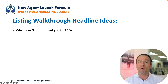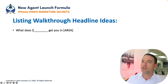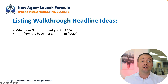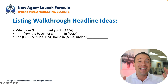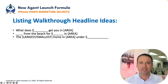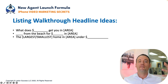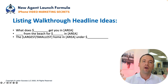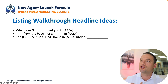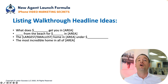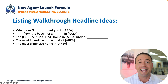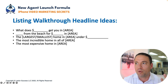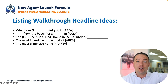You'd be surprised how many agents will let you showcase their listing, especially as your following grows. Listing walkthrough headline ideas: 'What does one million dollars get you in Tennessee?' 'What does two million dollars get you in Orange County?' 'One mile to the beach for one million dollars,' 'The largest home in all of Orange County under a million dollars.' Try to grab attention — why should they watch the video?